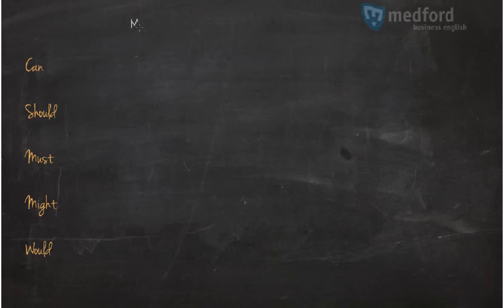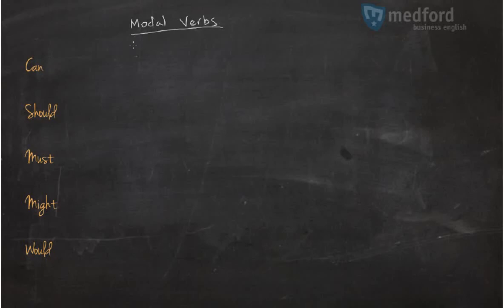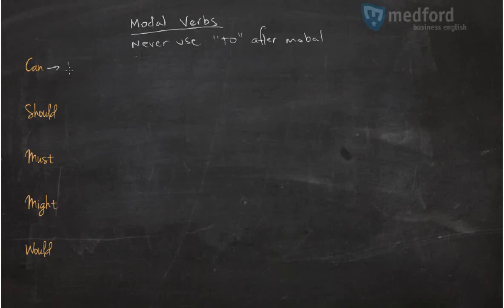We're talking about modal verbs here. There are some things you have to remember when you use them. For example, you never use 'to' after modal verbs — after modals. So you don't say 'can to' or 'should to.' You just use the modal and the verb, that's it.